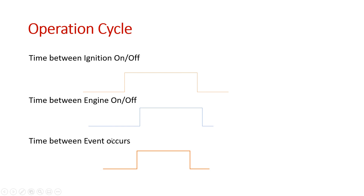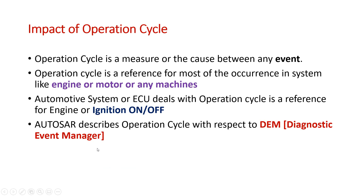AUTOSAR, being a generic architecture, has mentioned event as a specific term for the operation cycle. The operation cycle is a measure or the count between any event. For example, starting this tutorial is one major event, and stopping it — maybe after eight or nine minutes — is another event. That time gap is the operation cycle. It is a reference for most occurrences in a system like an engine, motor, or any machine.